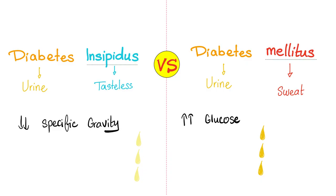Contrast that with diabetes mellitus, which is lack of insulin or insulin is there but not working, where your urine is super sweet — too much glucose. The color is different; the taste is different. Before sophisticated lab techniques, doctors used to actually taste the urine to make the diagnosis, and hence the name.